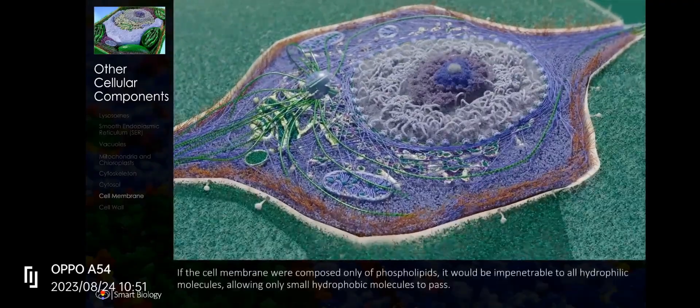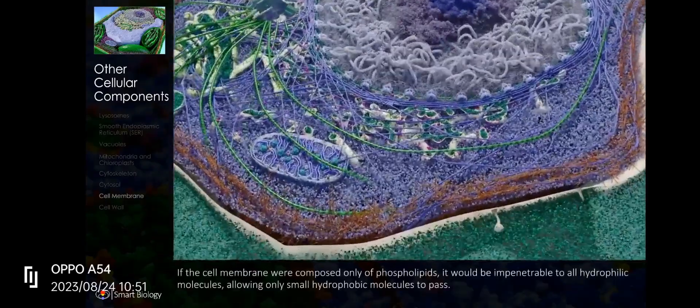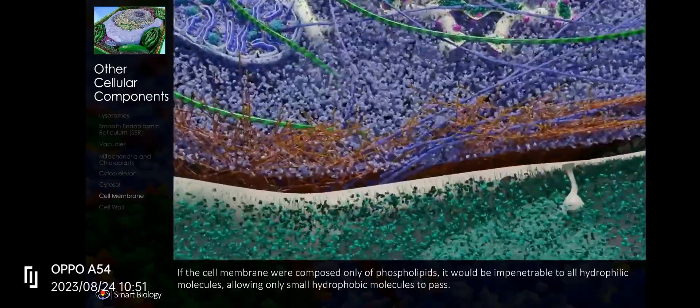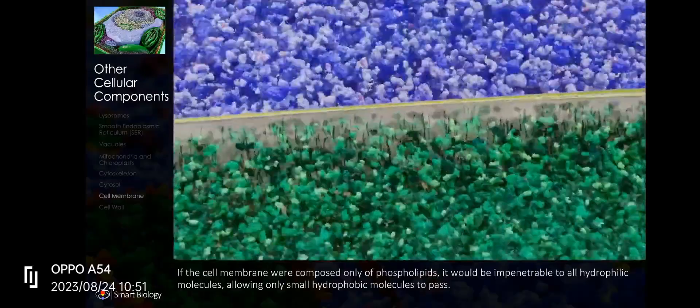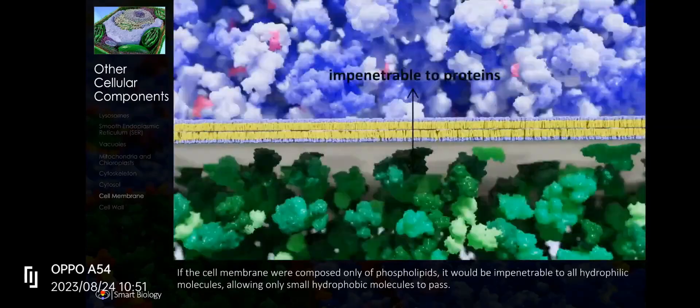If the cell membrane were composed only of phospholipids, it would be impenetrable to all hydrophilic molecules, allowing only small hydrophobic molecules to pass.